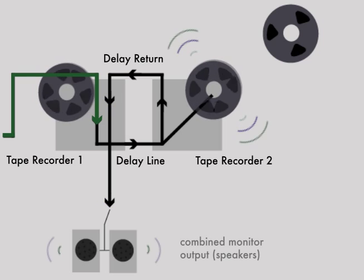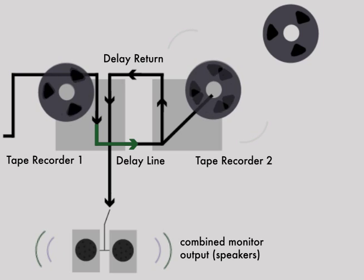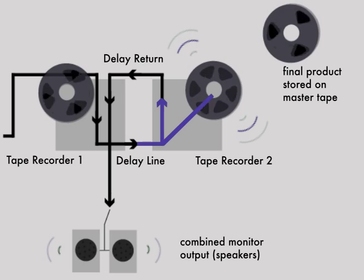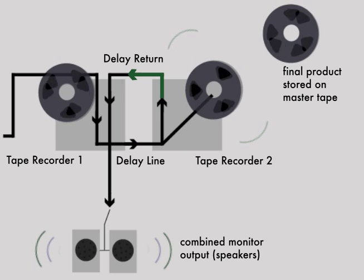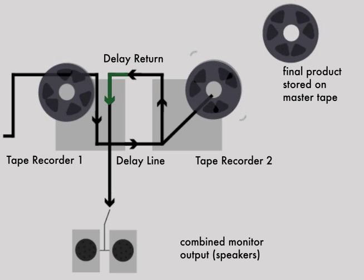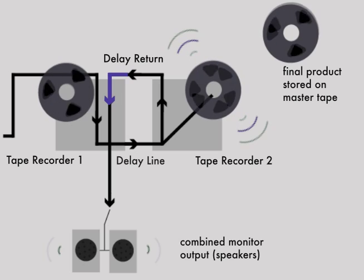This delayed music is then played out of the combined monitor output, which are the speakers. As the master tape begins to record what is played from the speakers and the second tape recorder, the music starts to overlap.